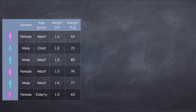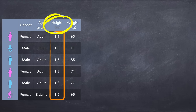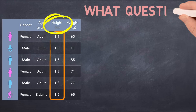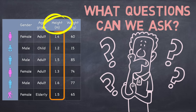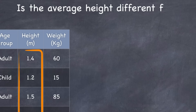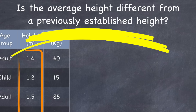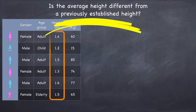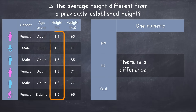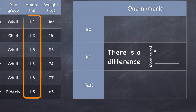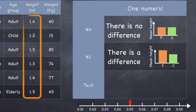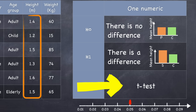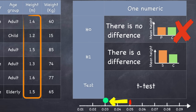If we want to look at just one numeric variable on its own, like height, we don't have any groups to compare or another variable to find a relationship with. We might have a theoretical value to compare our data to — for example, some historic average height data. We might wonder if the current population is significantly different from that historic data. Our hypothesis is that there is a difference. Let's imagine the previously established height was 1.4 meters. We collect sample data, find that the average height is different from the historic height, and ask: is that statistically significant? We conduct a t-test comparing the averages, and if the p-value is less than alpha, we reject the null hypothesis and state that the observed difference is statistically significant.